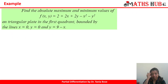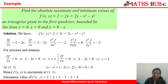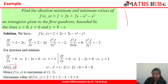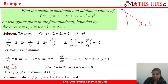The next question asks to find the absolute maximum and minimum values of the function on a triangular plate in the first quadrant bounded by the lines x = 0, y = 0, and y = 9 - x. We calculate ∂f/∂x = 2 - 2x and ∂f/∂y = 2 - 2y. Putting them equal to 0 gives the stationary point (1, 1). The region has vertices at (9, 0) and (0, 9), and the point (1, 1) lies inside this triangular region.